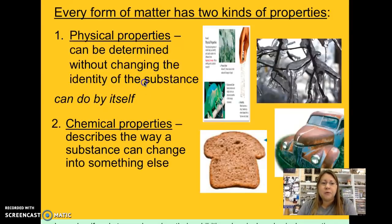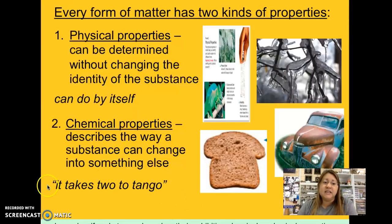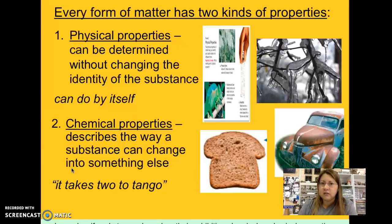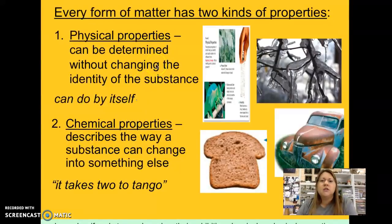The second type of property is chemical properties. I like to refer to chemical properties as 'it takes two to tango.' Something has to be done to that substance in order for you to know that it has that chemical property. Chemical properties describe the way that a substance can change into something else. Let's look at a couple of the physical properties in this picture.